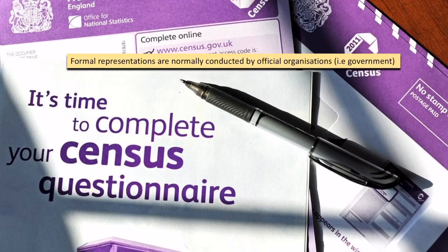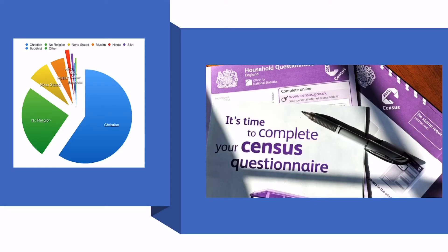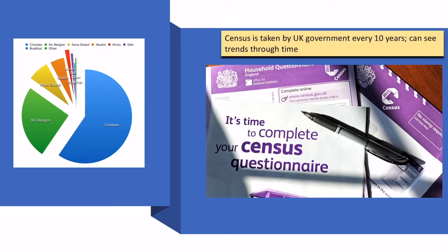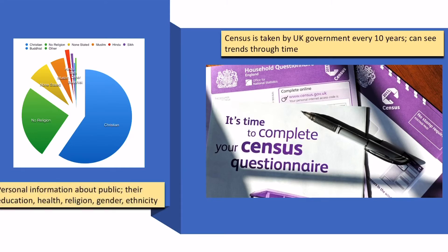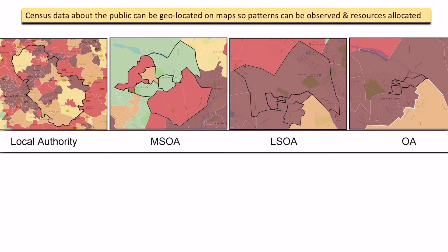One obvious way that we can create formal representations of place is the census. The census is where we collect information about a population — it's taken every 10 years in the UK, which means we can see a trend over time. It gives us a broad scale of information covering education, health, religion, gender, and ethnicity. Therefore we're looking at a much broader picture of a place than just one small view. Formal representations can also be located on maps — here's an example where deprivation data has been mapped so we can see patterns and allocate resources accordingly.